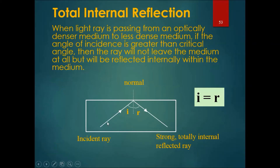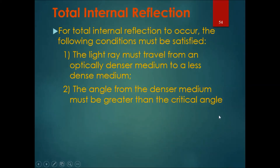An incident ray at a high enough angle would not escape the medium at all. It would instead bounce back completely, and there would be a strong, totally internally reflected ray, where I is equal to R. For total internal reflection to occur, the following conditions must be satisfied: the light ray must travel from an optically denser medium to a less dense medium, and the angle from the denser medium must be greater than the critical angle.